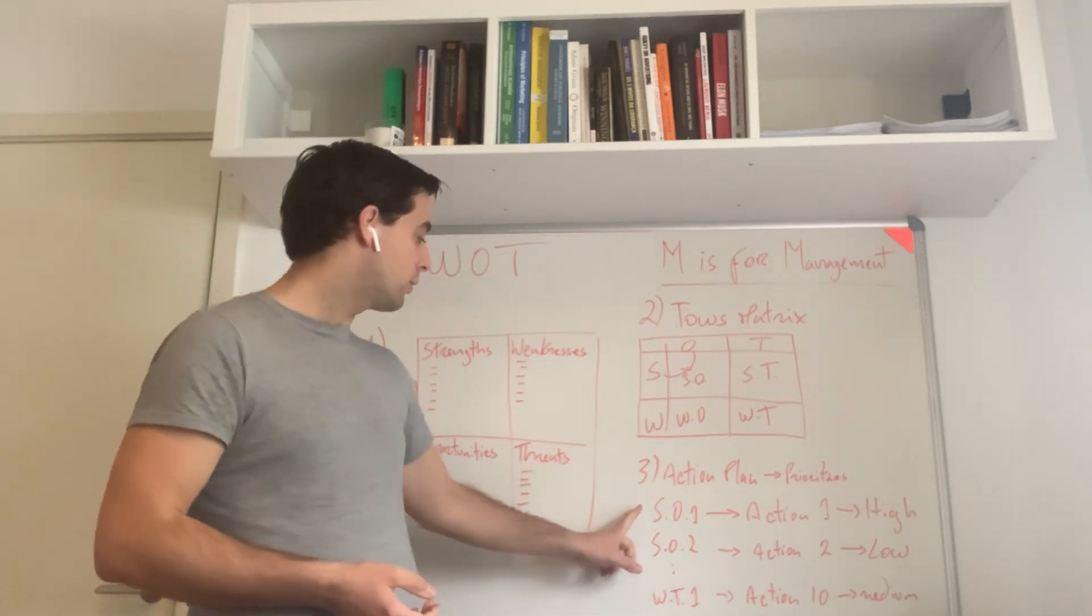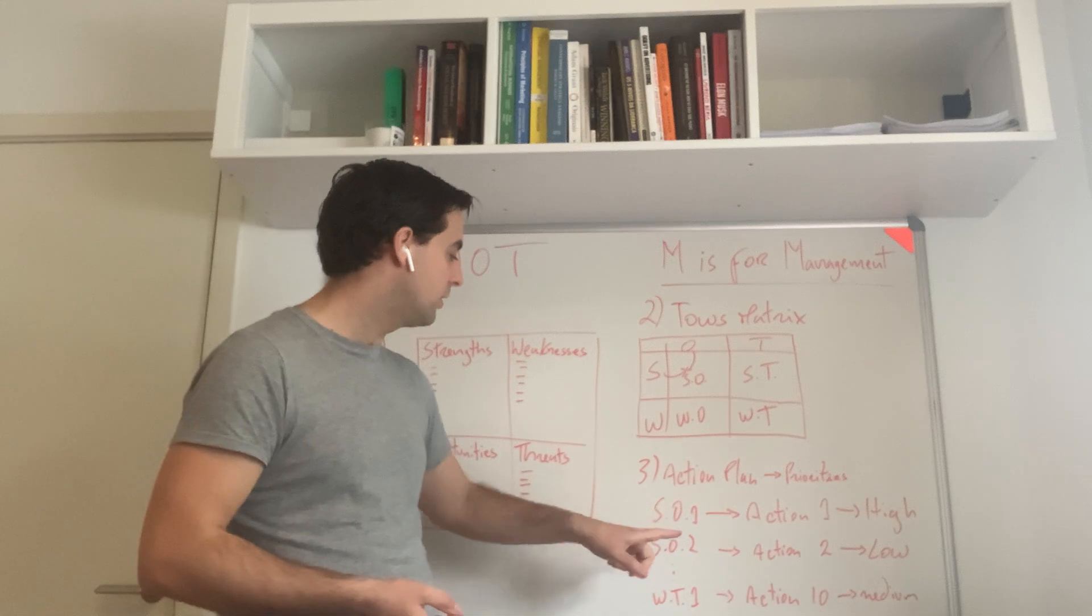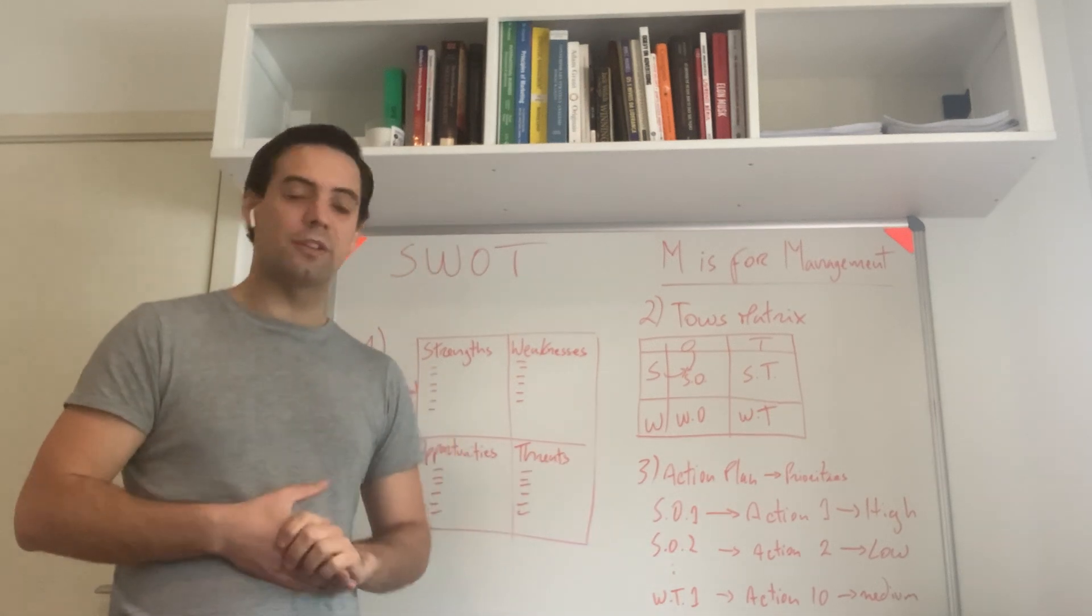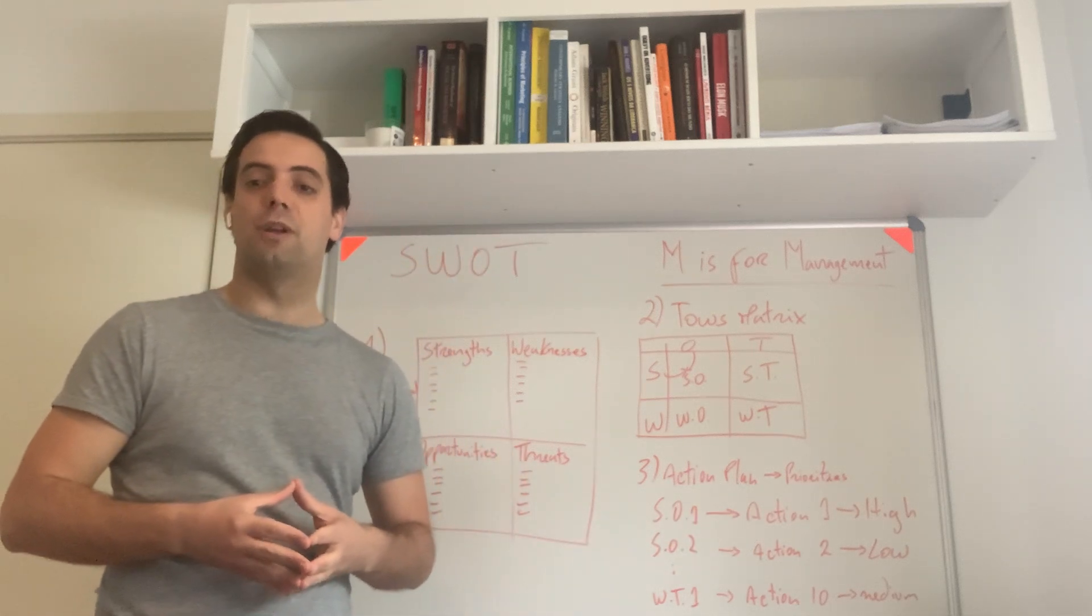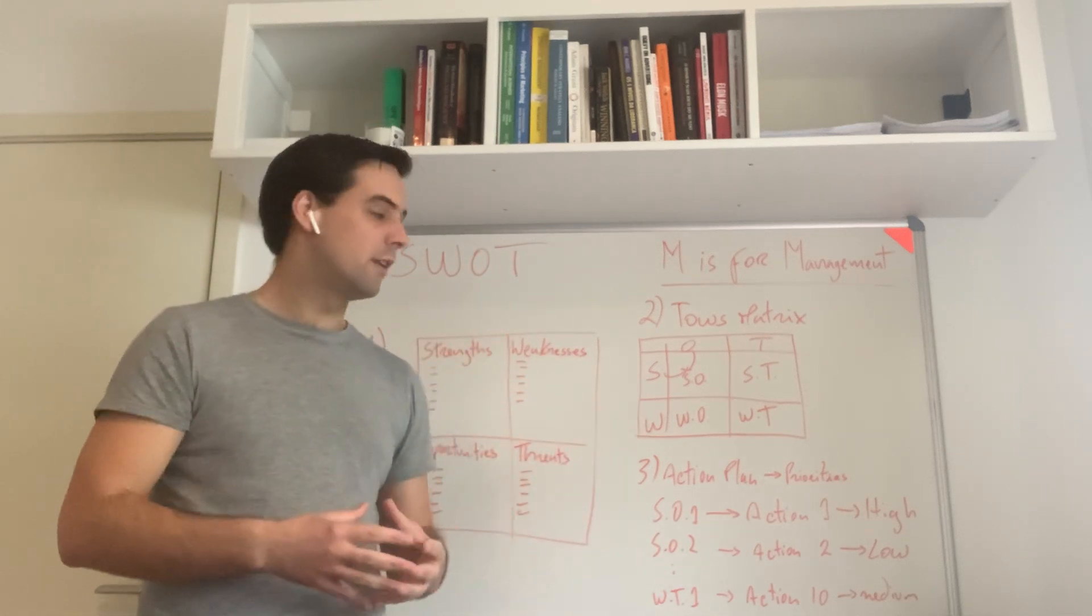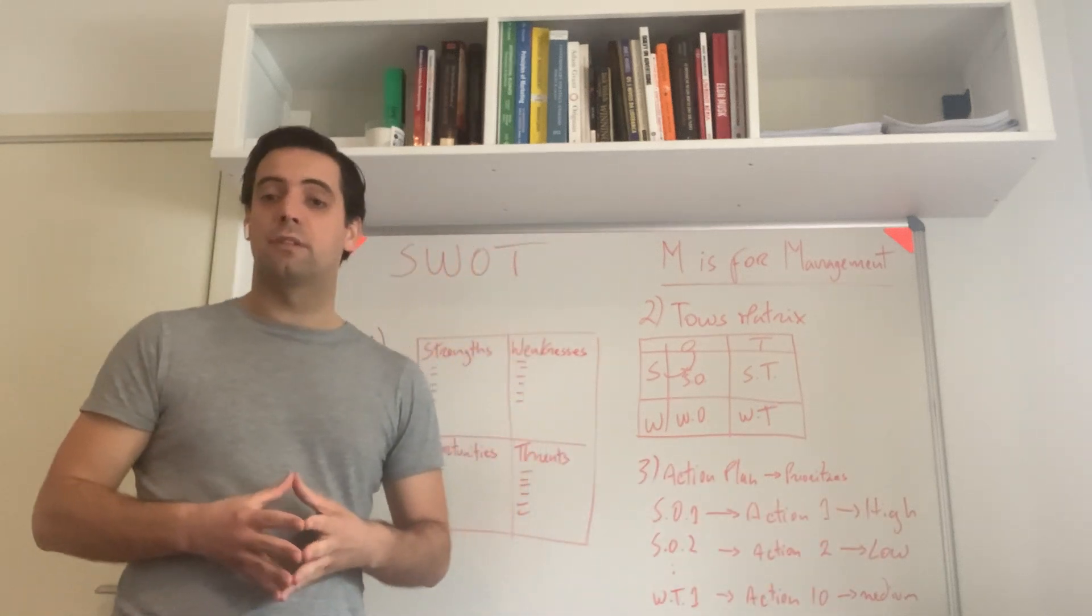This means you have strength X meets opportunity X - our first cross - and we have an action we can take with that information, something we can do, and then give it a priority.